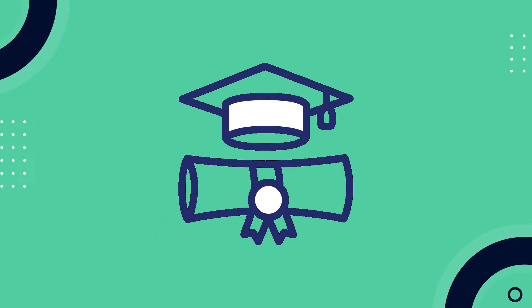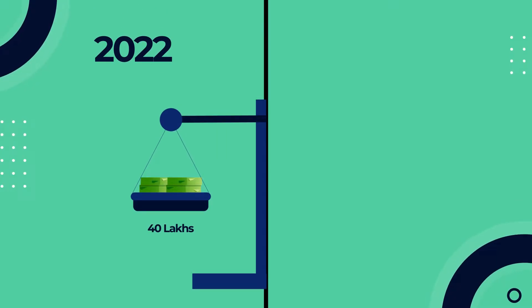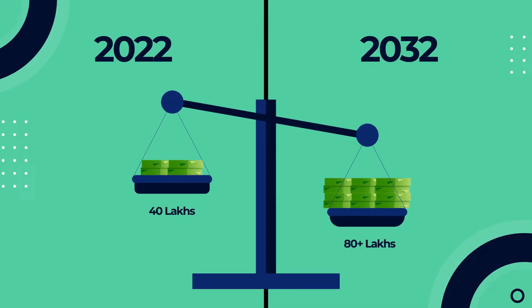Aap apna goal set kar liya — great! Lekin us goal ke liye aapko kitna save karna hai? For this, you need to have the exact number, ya at least us ke aas paas ka amount. Aur amount aaj ki rate se set nahi kar sakte. Why? Because jis degree ki cost aaj 40 lakh rupees hai, usi degree ki cost agle 10 years mein 80 lakhs aur 1 crore tak ho sakti hai. So you have to plan keeping the rising cost of education in mind.